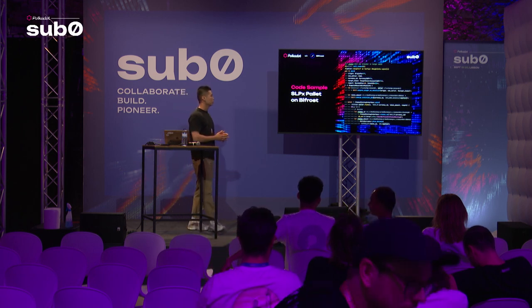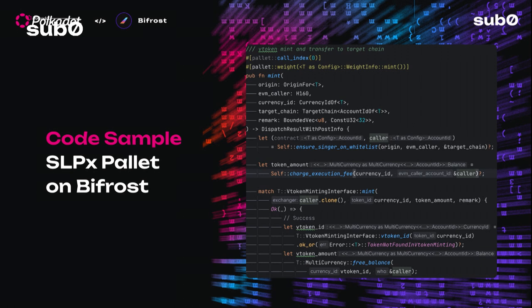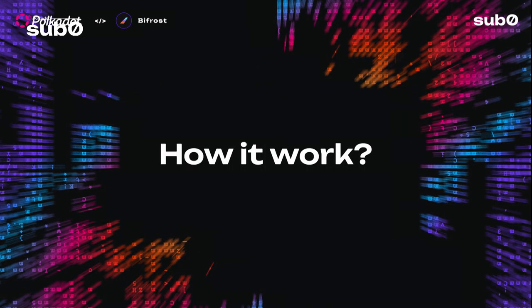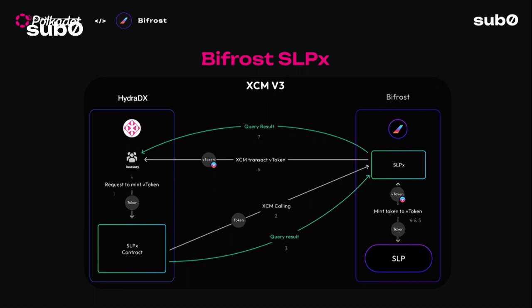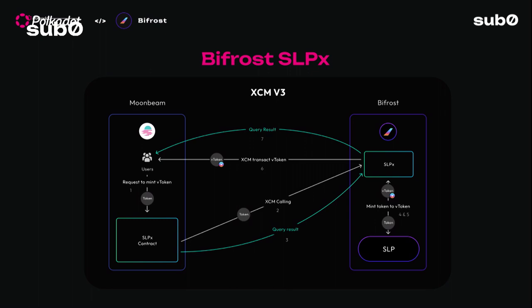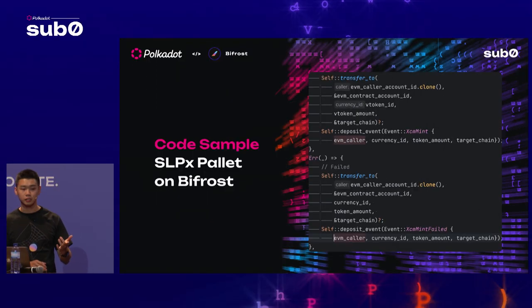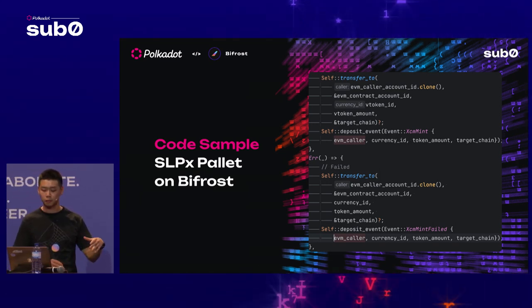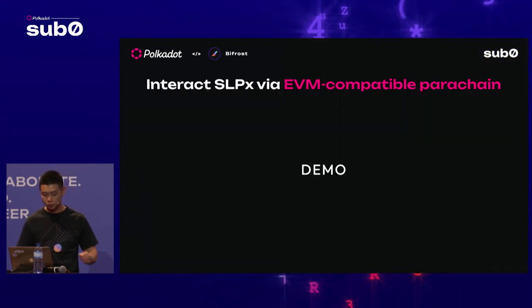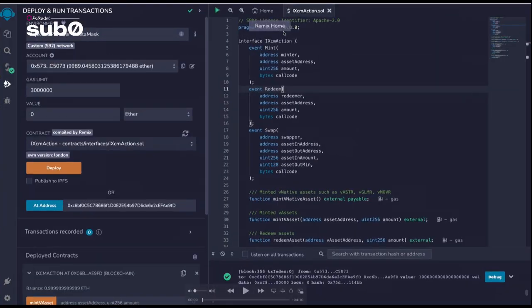Here are some important parameters for executing the logic on Astar and Moonbeam — similar to how HydraDX and Moonbeam contracts work on the source chain. Parameters include: where is the source chain, the currency ID (e.g., DOT if you want to mint DOT to vDOT), and the target chain with remarks if needed. For XCM transactions: the destination chain and how users receive the vtoken on the destination chain. We can go directly to the demo for a clearer picture.